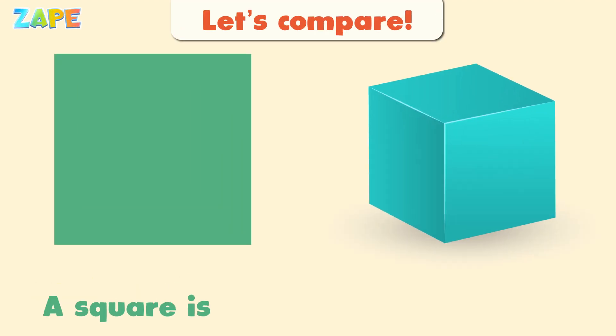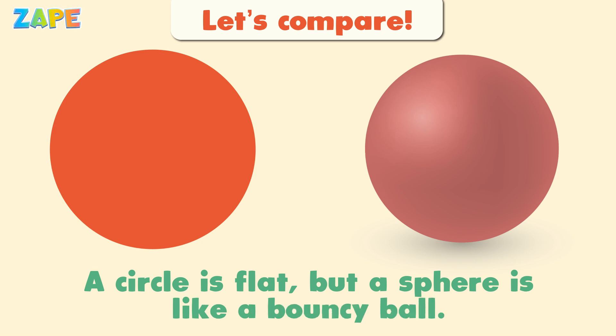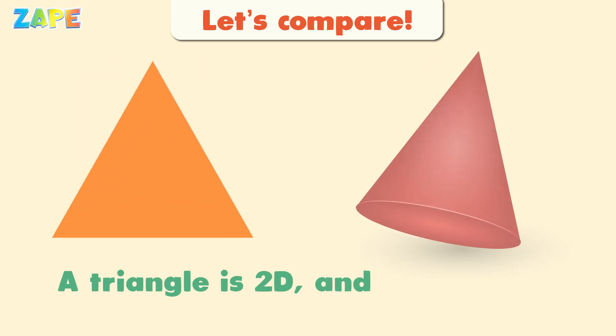Isn't that fun? Let's compare. A square is flat, but a cube is solid. A circle is flat, but a sphere is like a bouncy ball. A triangle is 2D, and a cone is 3D, like your birthday hat.